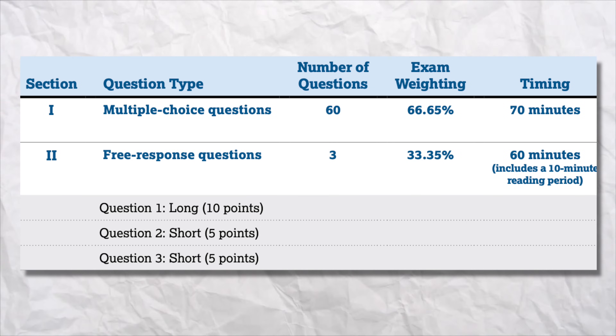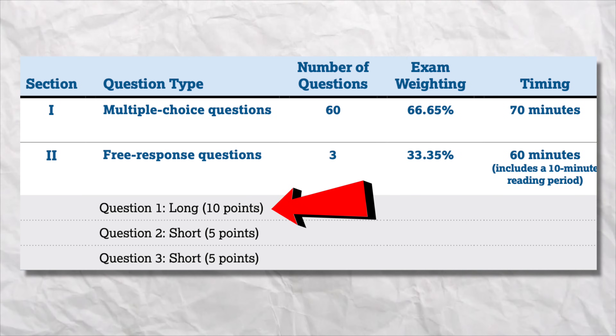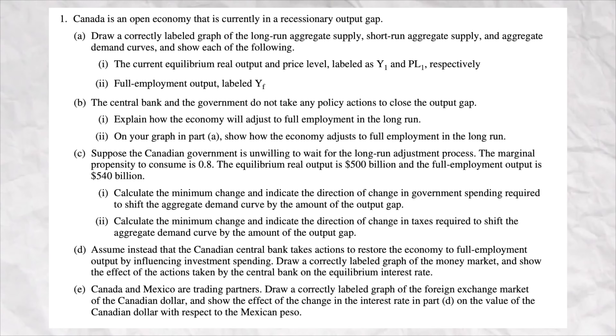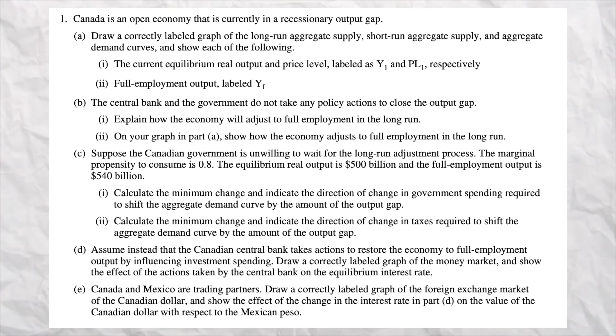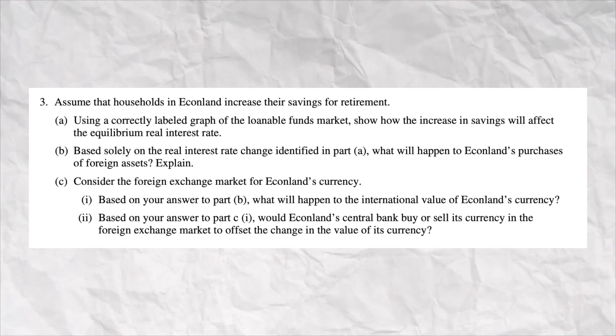As you know, there are three free responses. The first one is longer and worth more points, and it's going to pull from concepts from almost every single unit. The second and third free responses are shorter and usually pull content from only one or maybe two units.